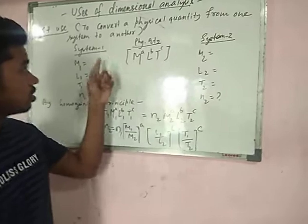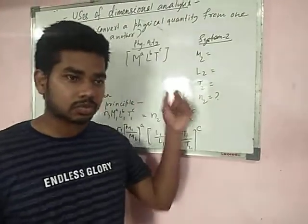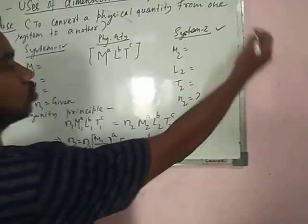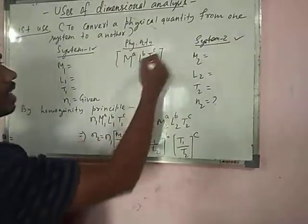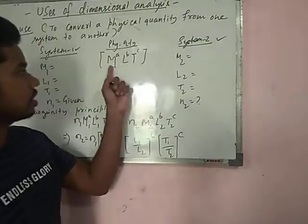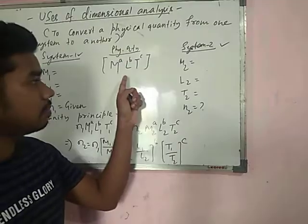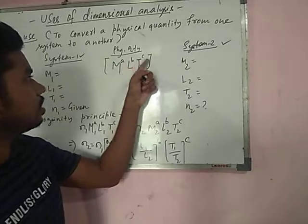Suppose a physical quantity is given in one system. We have two systems: system one and system two. The physical quantity dimension we write as M to the power A, L to the power B, T to the power C. Here the dimension is not fixed, so I have written A, B, C as integers.